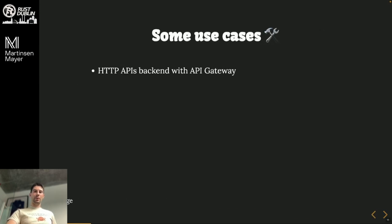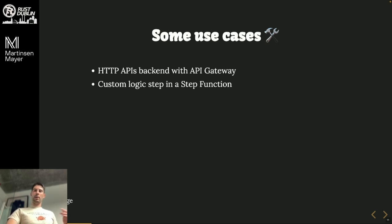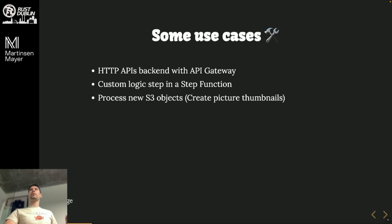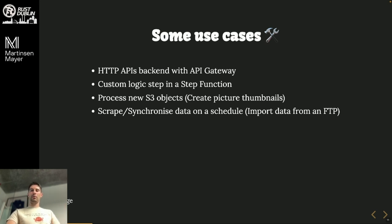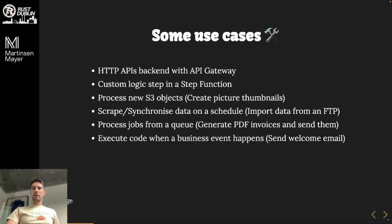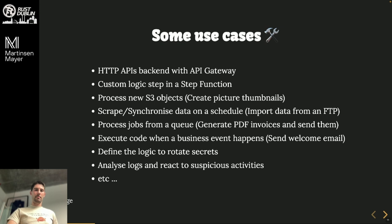With HTTP you can build an API using API Gateway and Lambda. You can build custom Step Functions. You can process files in S3 — for example, drop a video and extract thumbnails. You can scrape and synchronize data on a schedule. One real use case was downloading files for the electricity industry from an FTP every half hour, processing them, and saving to a database.